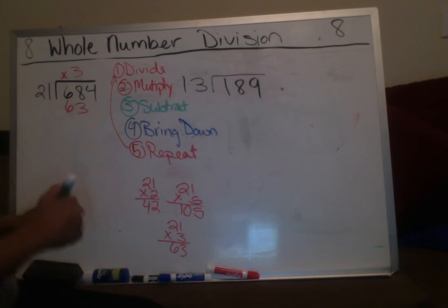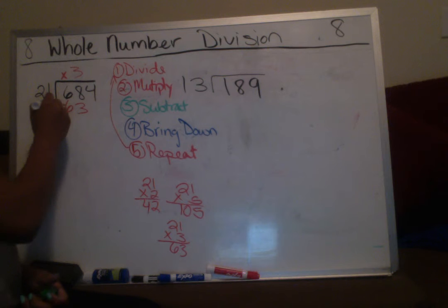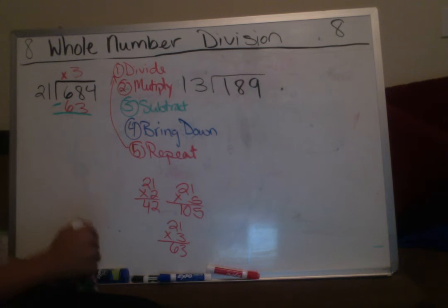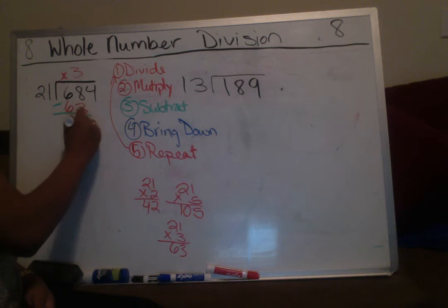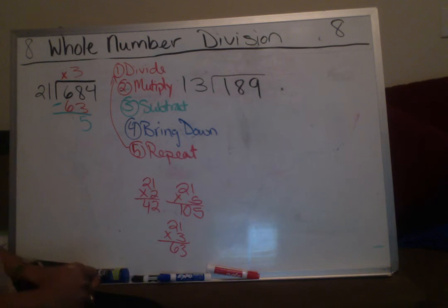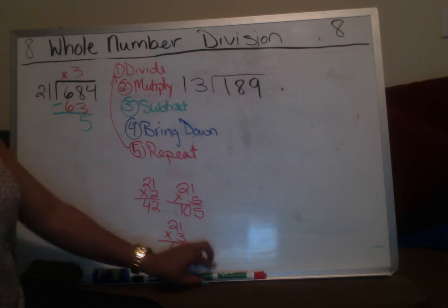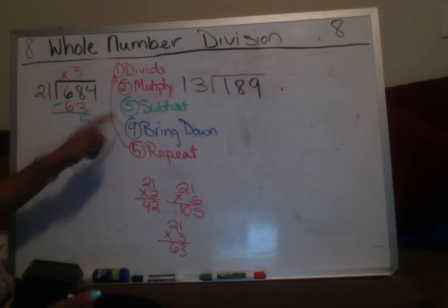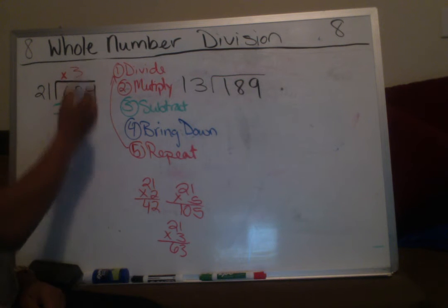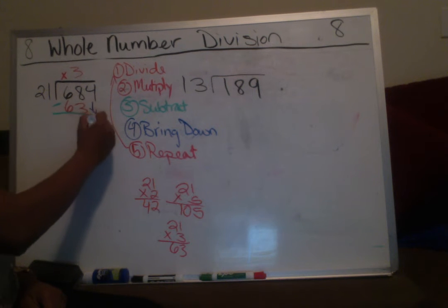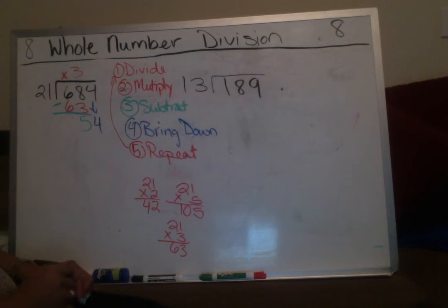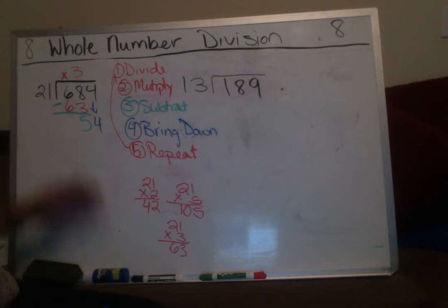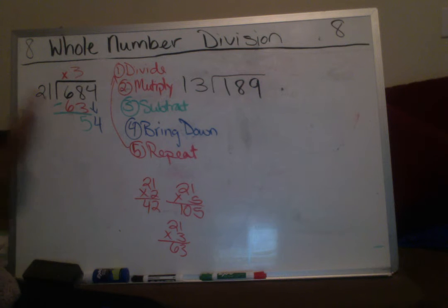21 times three is 63. Now the next step is to subtract. 8 minus 3 is 5. Then bring down one number at a time — we bring down the four. Now we have 54.